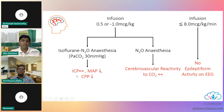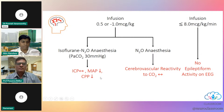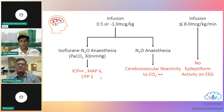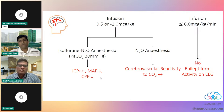Regarding cerebral hemodynamics: there is no increase in ICP, but there is a decrease in mean arterial pressure which can decrease cerebral perfusion pressure, so vasopressors should be available. There is no change in cerebrovascular reactivity to CO2, and importantly, no epileptiform activity on EEG — so we use remifentanil at high doses during epilepsy surgeries without seeing any EEG changes.